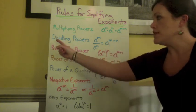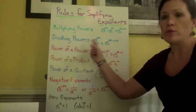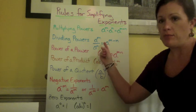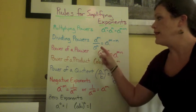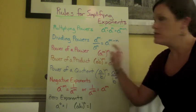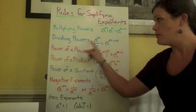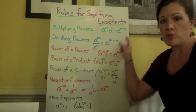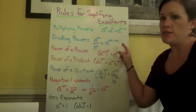The next rule states dividing powers. So when we have a to the m power divided by a to the n power, that would be equal to a to the m minus n power. So when we're dividing powers, we need to subtract. Multiplying you add, dividing you subtract.